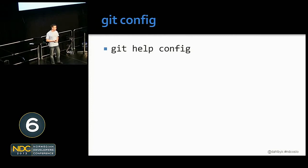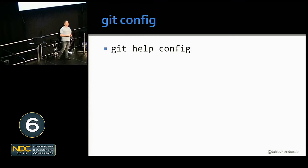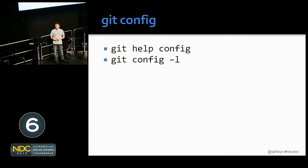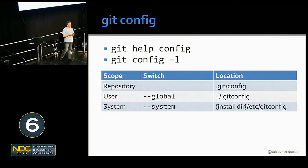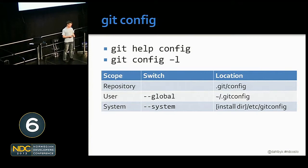So first up: config. Git config lists out literally hundreds of options for configuring Git to work like you want it to. You can see your current configuration with `git config -l`. Configuration is set up in three levels: a repository level config that lives in `.git/config`, a user level that lives in your user directory's `.gitconfig`, and a system level one installed with your distribution of Git. When making changes, you'll almost always want to make those at the global level.